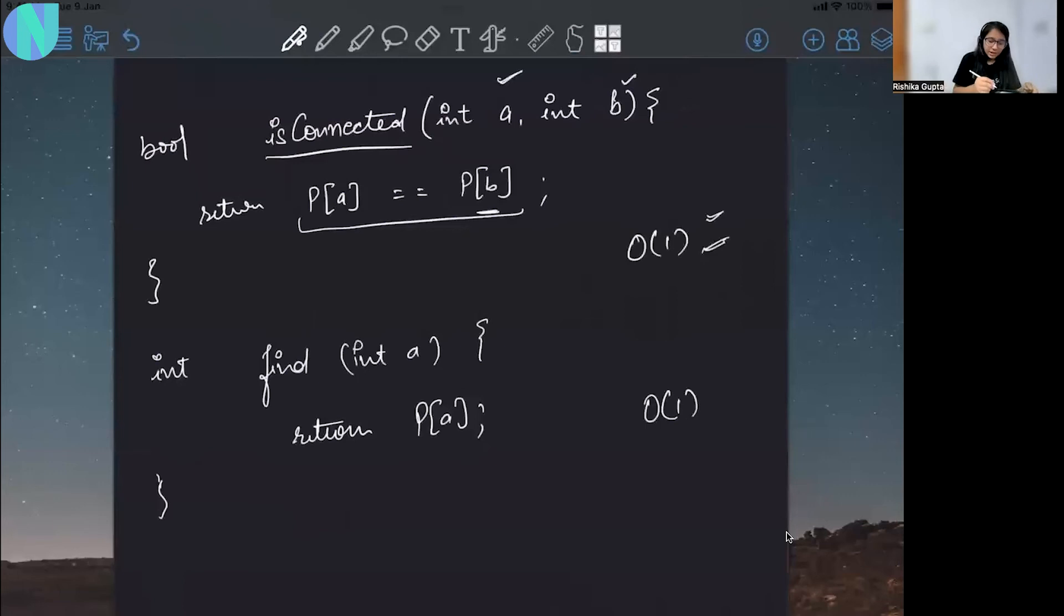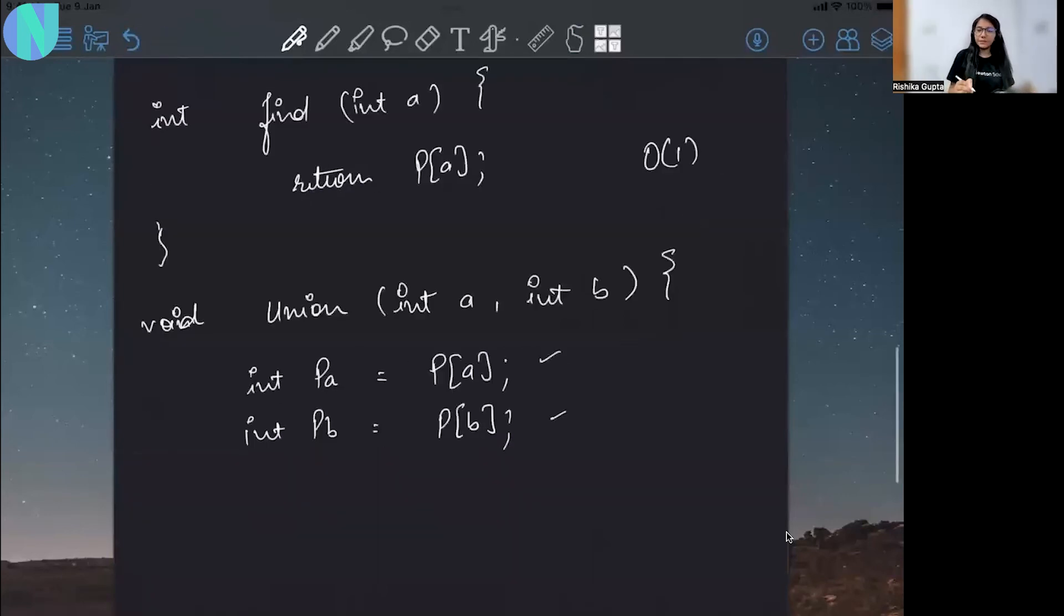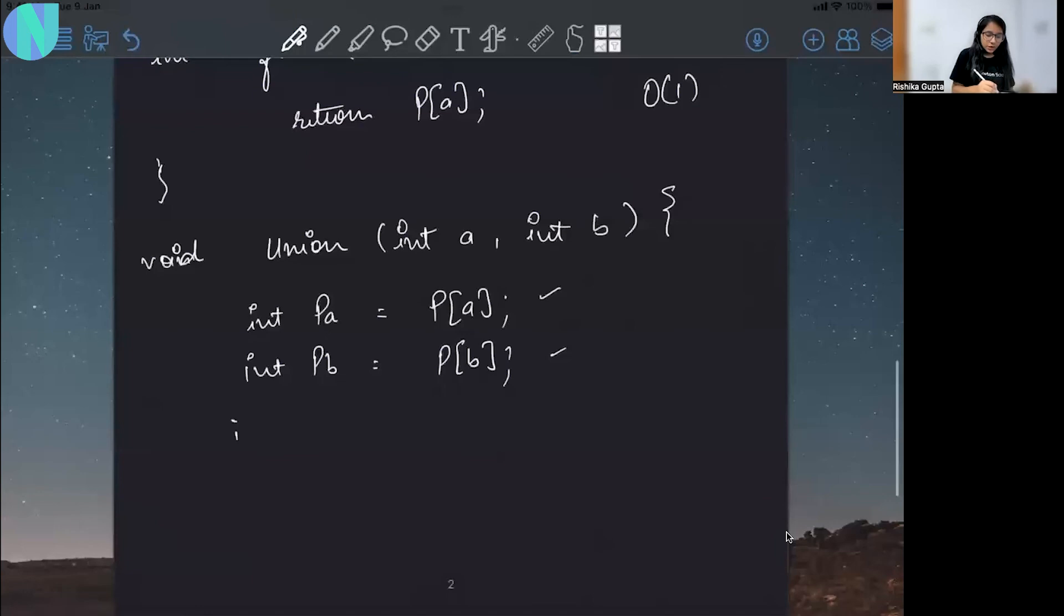Now what about your union operation? So union operation is going to happen here. Let's say this is your union operation. You are taking two values here - int a and int b - and you have to union it. Now what are you going to do? You will check the parent of a and you will take the parent of a. Now you are going to check parent of b. Here p is your parent array. Now first of all you will check whether these two elements belong in the same set or not. So what you can simply do is you can either write an if statement in which you will put the same condition or you can call this connected. I am going to write a simple if statement: if p of a is equal to p of b, in this case I am going to simply return because there is no need to apply the union operation because both the nodes are already connected. Now if this is not the case, then what are we going to do?